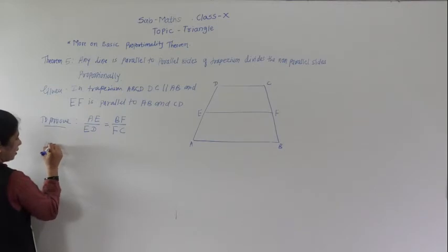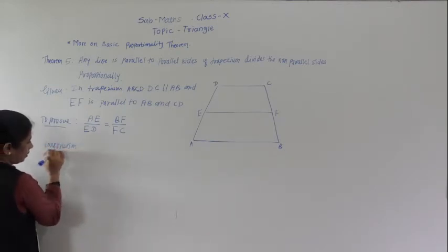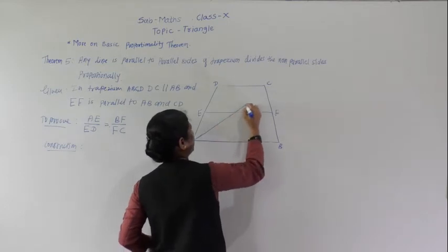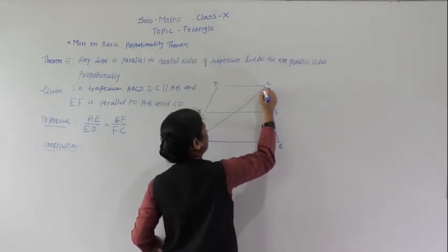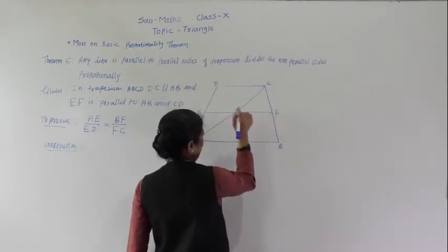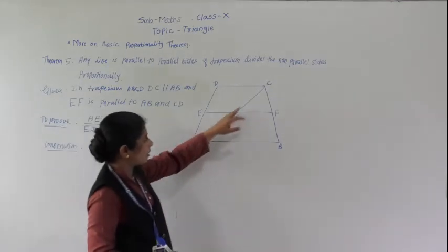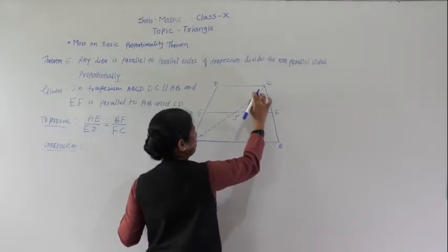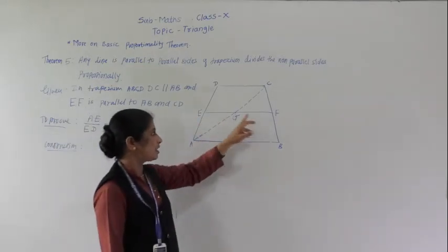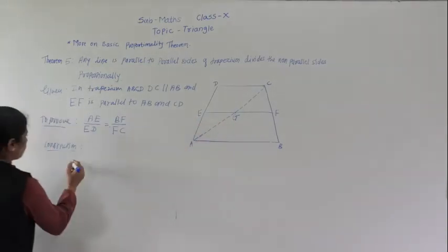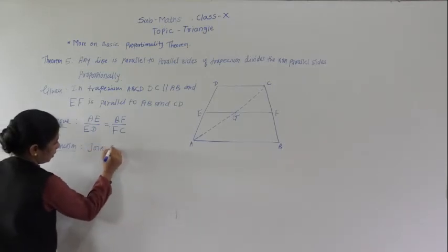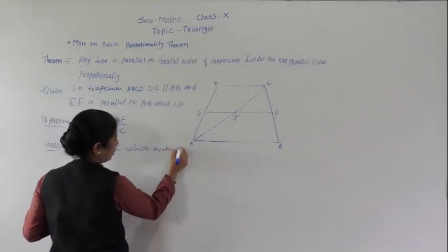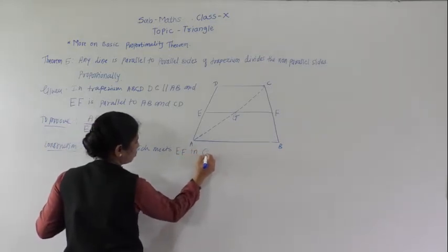For this construction, join diagonal AC, which meets EF at point G. Construction: join AC, which meets EF at point G.